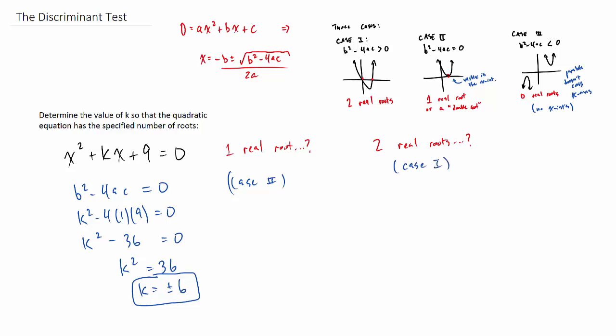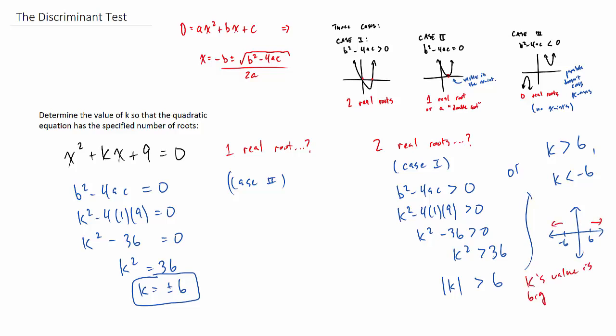They also could have asked us, well what if you want two real roots? So same equation. Basically we just have to make the discriminant positive. Now we're actually solving something that's an inequality, so this is actually a hint of the next chapter. What that means is that k's value has to be bigger than 6. So it could either be like 7, 8, 9, or it could actually be to the left of negative 6. Basically as long as it's outside of positive 6 and negative 6, not in between, then we'll be okay and we'll have two real roots.